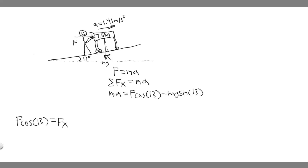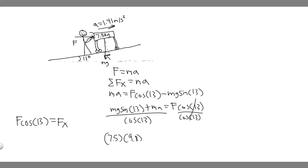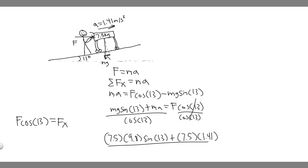Those are the only two forces in the x direction, so we can now solve for F. We rearrange by adding mg times sine of 13 to both sides: mg·sin(13) + ma equals F·cos(13). Then dividing both sides by cosine of 13 gives us F. So F equals m times g times sine of 13 plus m times a, all divided by cosine of 13.